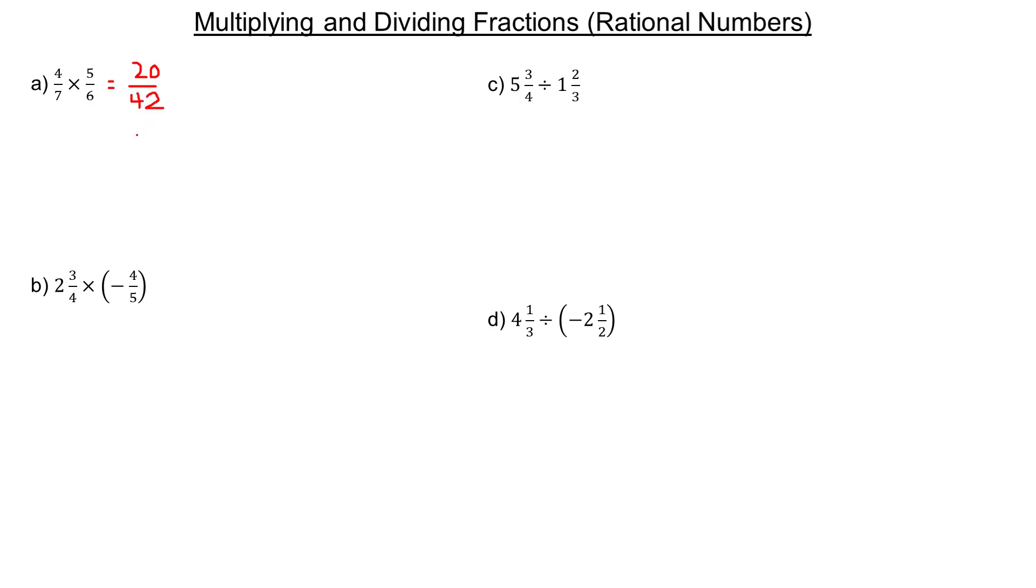That would be our answer. You should always check at the end to see if it will reduce. 20 and 42 are both even, so 2 divides into both. If we divide top and bottom by 2, 20 divided by 2 is 10, and 42 divided by 2 is 21. So 10/21 would be our lowest terms or reduced final answer.